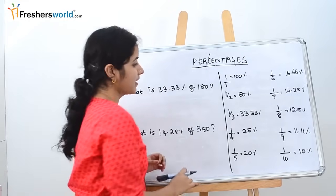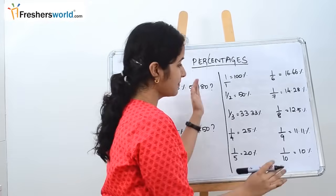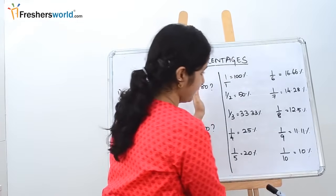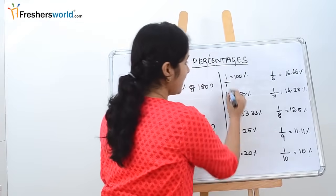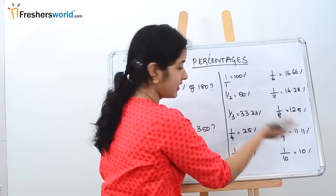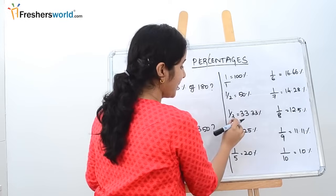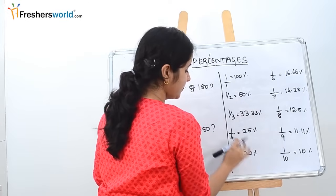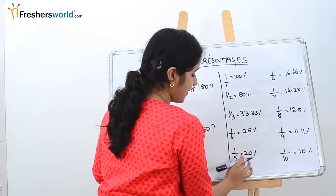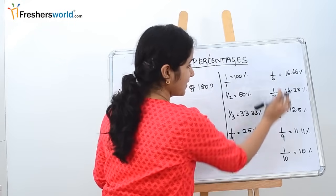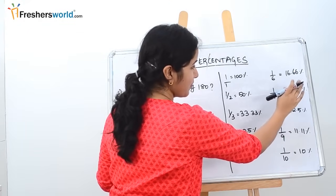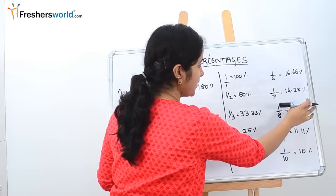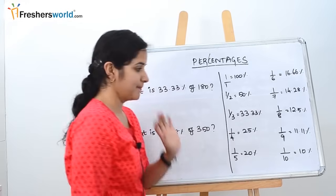The second important thing is that you should memorize fractions from 1/1 to 1/10 as percentages. 1/1 = 100%, 1/2 = 50%, 1/3 = 33.33%, 1/4 = 25%, 1/5 = 20%, 1/6 = 16.66%, 1/7 = 14.28%, and so on till 1/10.